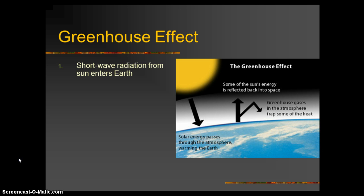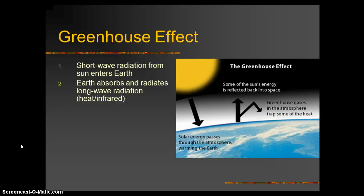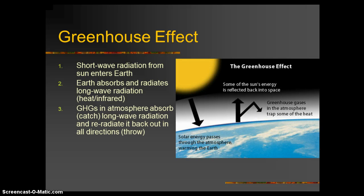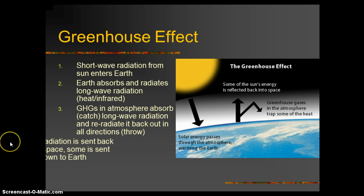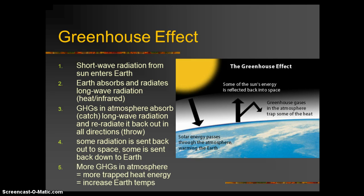Let's write some stuff down. We have shortwave radiation coming in from the Sun to the Earth's system. The Earth absorbs and radiates longwave radiation in the form of heat and infrared. If it doesn't have a high albedo and doesn't reflect, it's going to absorb and re-radiate as longwave heat. Greenhouse gases in the atmosphere absorb or catch that longwave radiation and re-radiate it back down in all directions — like catching a baseball and throwing it back. Some radiation is sent back out to space, but some is sent back down to Earth, building up trapped energy and increasing the Earth's temperatures.